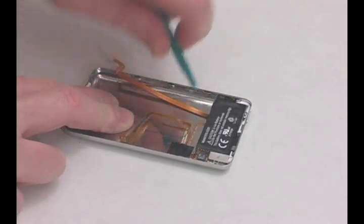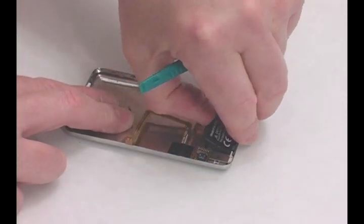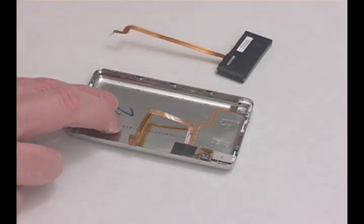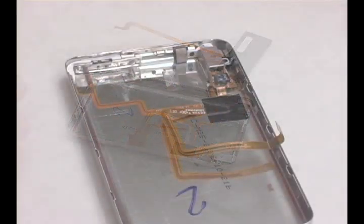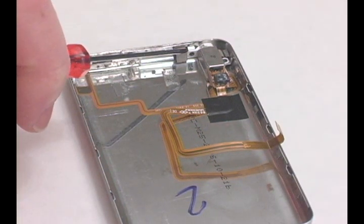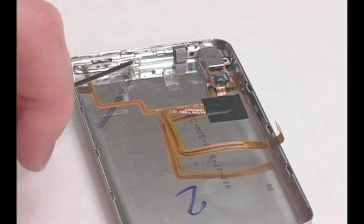Pry up the battery and remove it from the back plate. There are four screws holding the headphone jack in place. Remove them, remembering where each one goes.